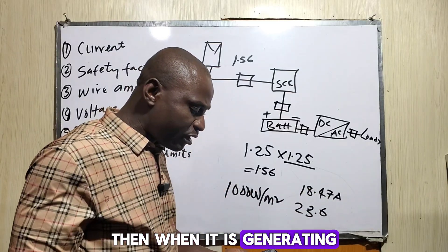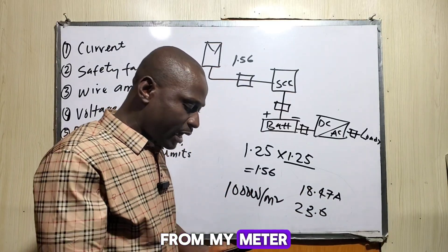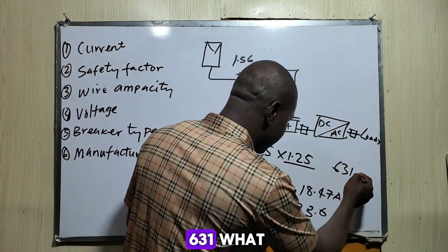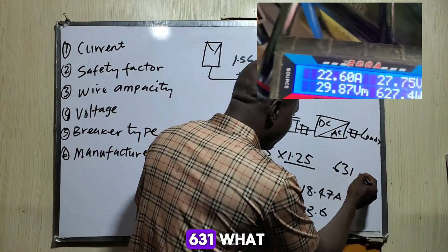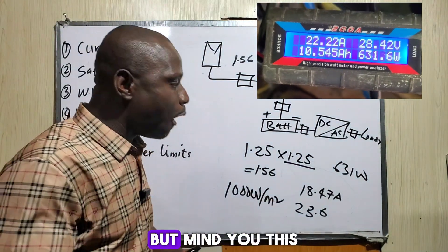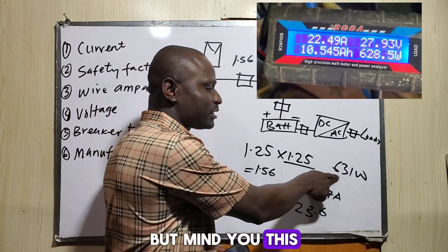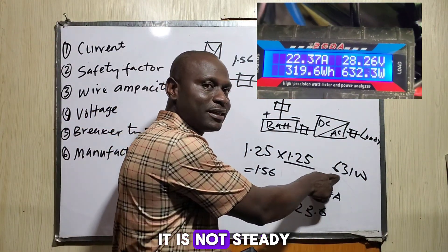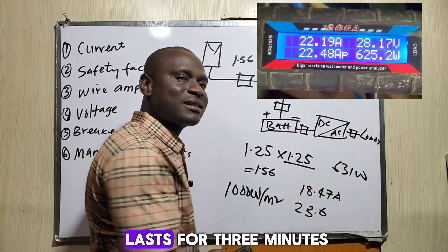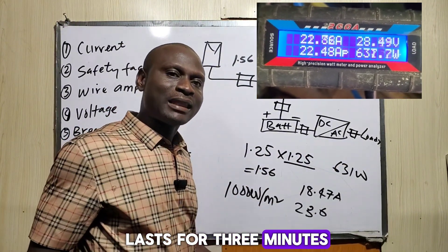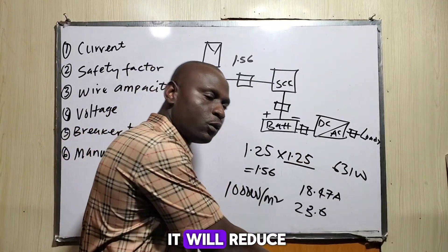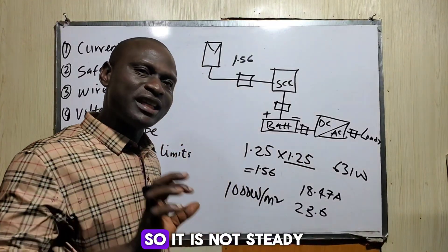When checking the generation from my meter, most times the value is 631 watts from a 600-watt solar panel. But this is not constant or steady — it fluctuates and typically lasts only three to five minutes before it reduces.